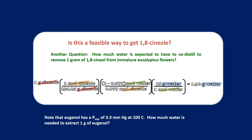Note that the eugenol we're going to attempt to steam distill in our lab this week only has a vapor pressure of about 3.3 millimeters of mercury, or 3.3 torr. You should calculate for yourself exactly how much water it will take to remove an entire gram of eugenol, which is approximately the amount we'd like to obtain.